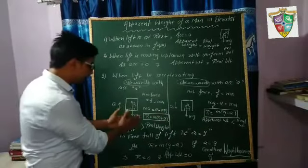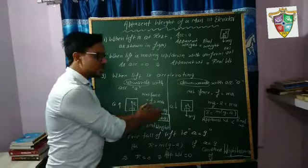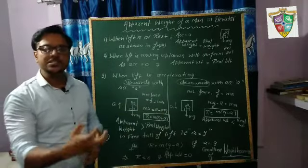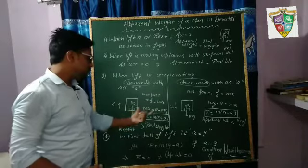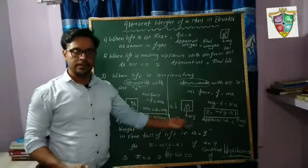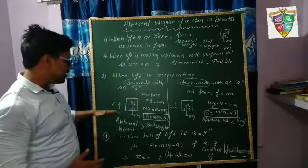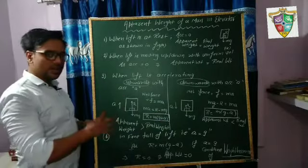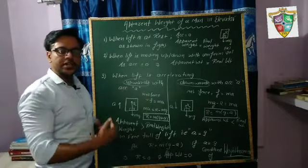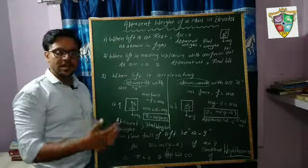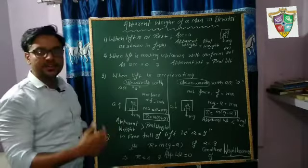So from this relation, we clearly see that apparent weight is greater than the real weight. Real weight is MG and apparent weight is MG plus MA. So this is a case in which if we are in lift and lift is accelerating upwards with some acceleration, then our apparent weight is greater than our real weight.